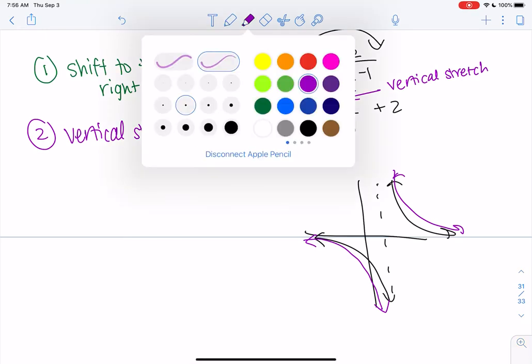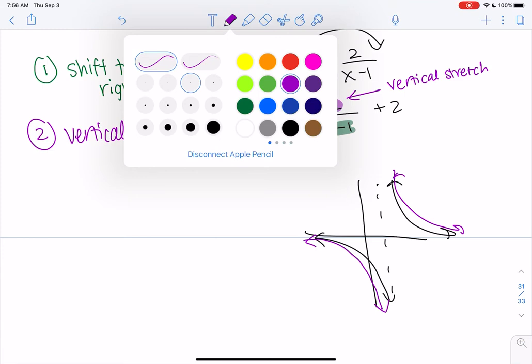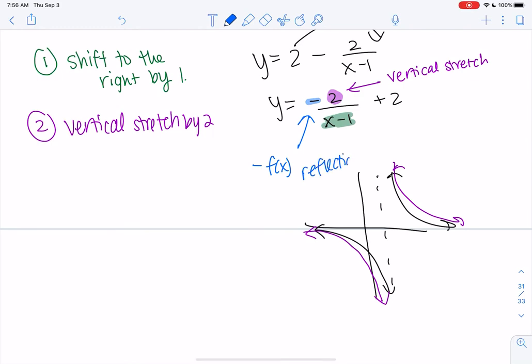So then the negative sign tells me it's a reflection. And so the negative on the outside is a reflection about the x-axis, which means it basically flips upside down. This is like the negative f of x because it's on the outside. A reflection about x-axis.